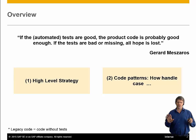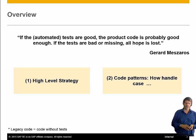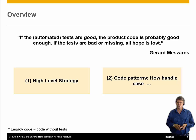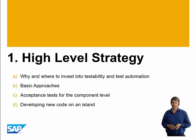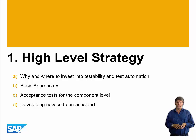This question of agile software engineering and legacy code has two parts. One is high-level strategy, which is what this video is about. The second video will cover code-level patterns — the ten most important patterns for dealing with certain situations. We'll start with high-level strategy, which is really a question of why and where to invest.